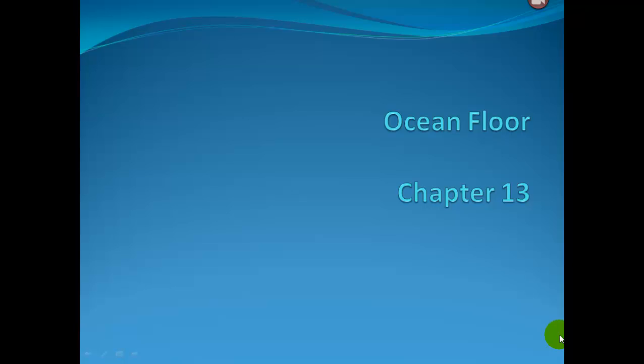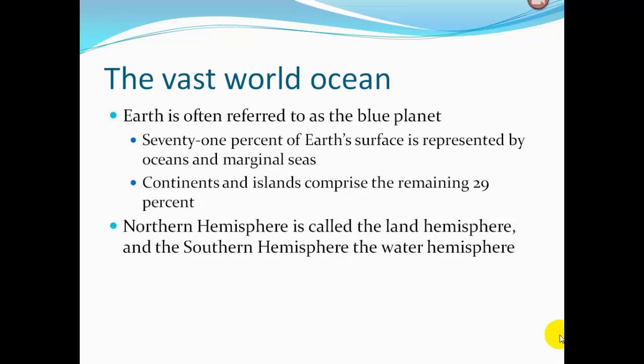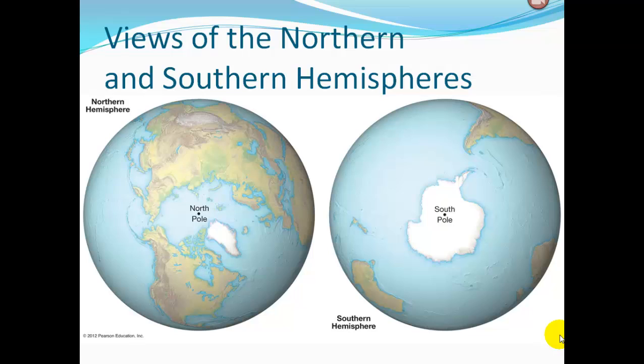Chapter 13: The Ocean Floor. The vast world ocean — Earth is often referred to as the blue planet. 71% of Earth's surface is represented by oceans and marginal seas, while continents and islands comprise the remaining 29%. The northern hemisphere is called the land hemisphere, and the southern hemisphere is the water hemisphere, because most of the land is in the north, while the south is mostly ocean.